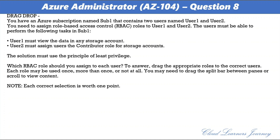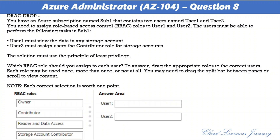Question 8. You have an Azure subscription named Sub1 containing User1 and User2. User1 must view data in any storage account; User2 must assign users the Contributor role for storage accounts. The solution must use the principle of least privilege. For User1, assign the Reader and Data Access role — it lets you view everything but not delete or create storage accounts, and allows read/write access via storage account keys. For User2, assign the Owner role, as it is needed to manage permissions since User Access Administrator is not offered as an option.